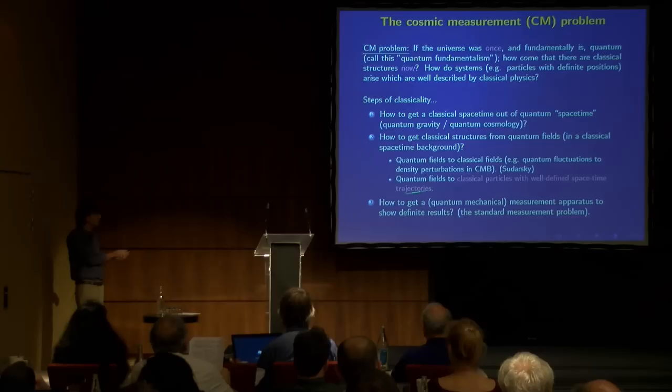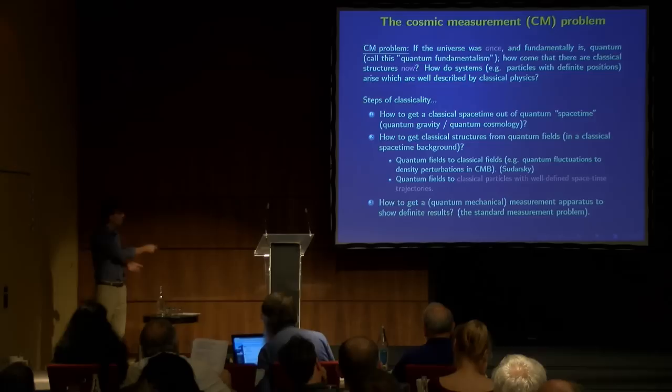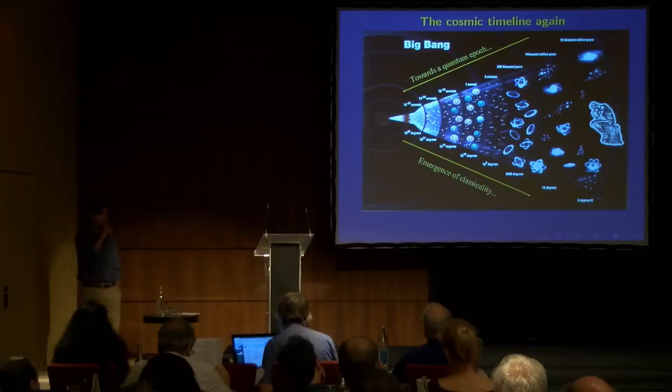The second problem is how to get classical structures from quantum fields once you have a classical space-time background. How do you get quantum fields to classical fields? For instance, how do you get quantum fluctuations to density perturbations in CMB? That was the talk by Sudarsky just heard. Now, other people have, of course, worked on this as well. And also, one can ask a related question. How do we get from quantum fields to classical particles with well-defined space-time trajectories? And finally, one might ask how to get a quantum mechanical measurement apparatus to show definite result. That's just the standard measurement problem, which, of course, occurs all along the way, because there are quantum constituents also now, of course.